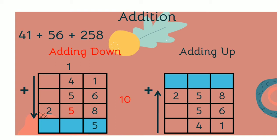10 plus 5 is 15. You put 5 down, 1 up. 1 plus 2 is 3. You take it and write 3 down.